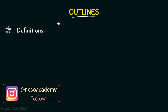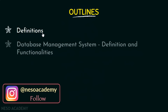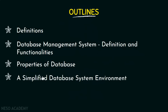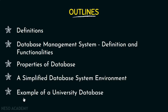The first one we are going to see is the basic definitions or the basic terminologies that we need to know. Next we'll be looking into the definition and functionalities of database management system and then we'll be discussing about the properties of database. Next we'll be briefly looking into an illustration of a simplified database system environment, and finally we'll be looking into an example of a university database.